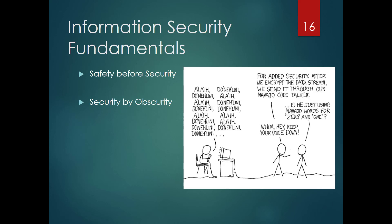Welcome back. This is the fourth of eight videos looking at chapter one. During this video we're going to get into some information security fundamentals, starting with safety before security and security by obscurity, then move into other design principles like least privilege, separation of duties, and transitive risk. Let's start with safety before security.